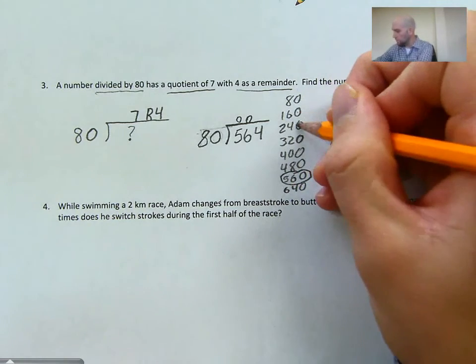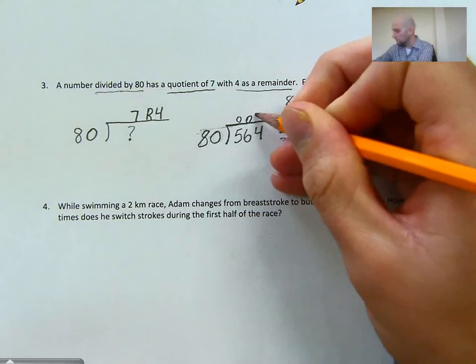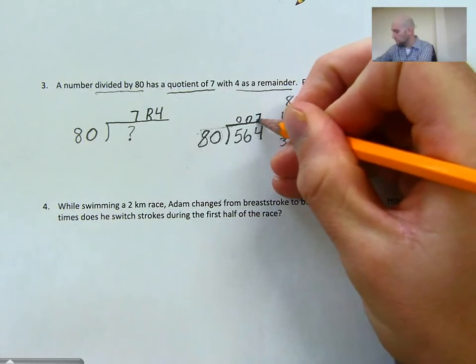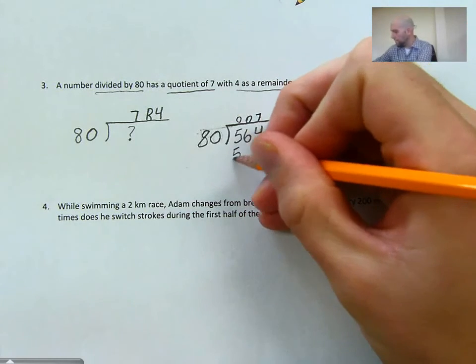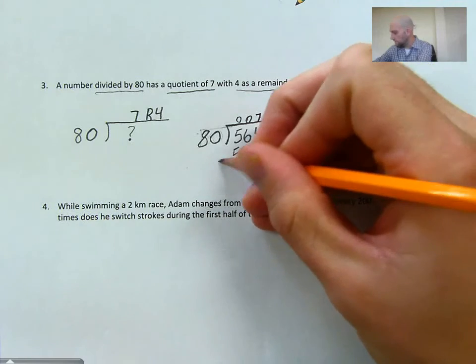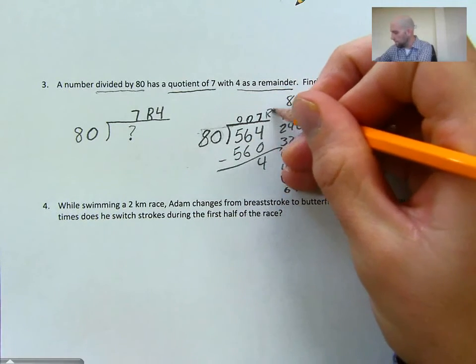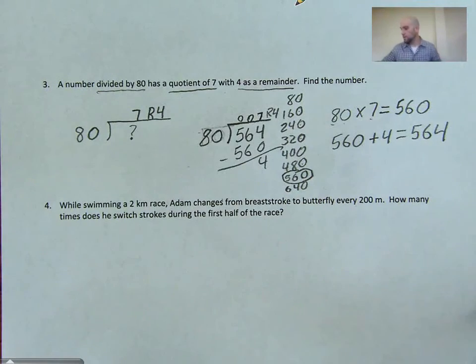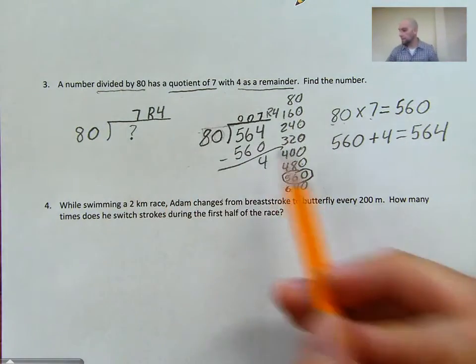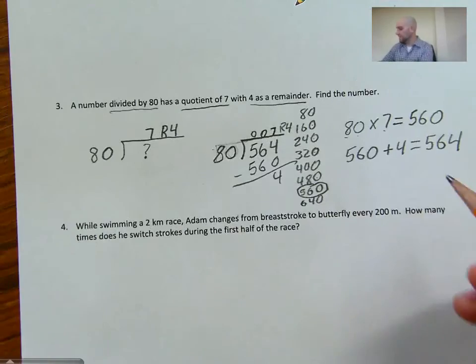All right, 560 right here. 1, 2, 3, 4, 5, 6, 7. And then when I subtract 560, I get 4. Remainder 4. If I check my work, I found out that this number is 564.